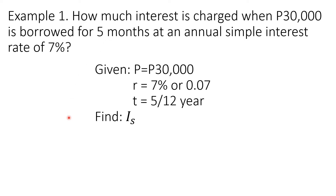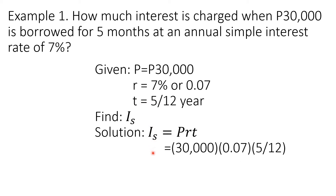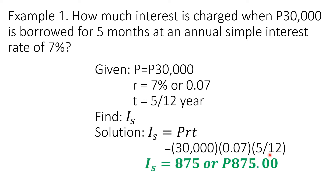Using the formula for simple interest, I sub S equals P times R times T, we substitute the given values. The equation becomes I sub S equals 30,000 times 0.07 times 5 over 12. By multiplying these three values — you may use your calculator — you will get the value of the simple interest, which is 875 pesos.